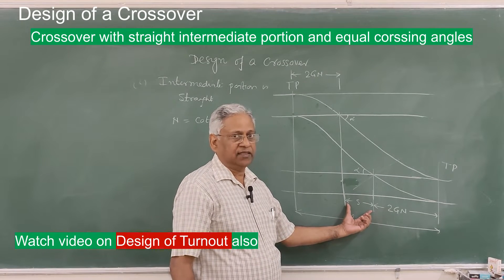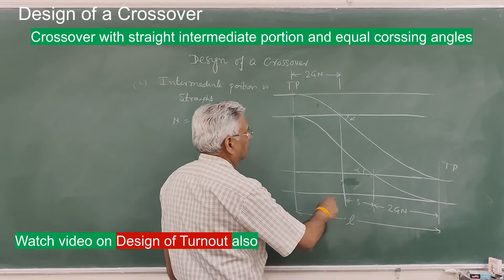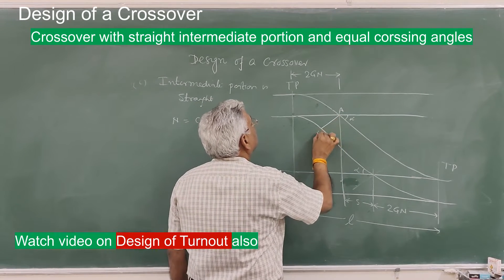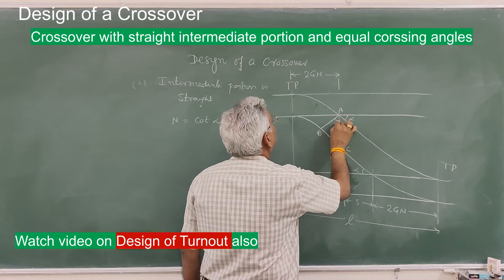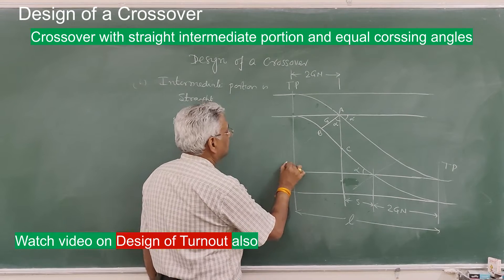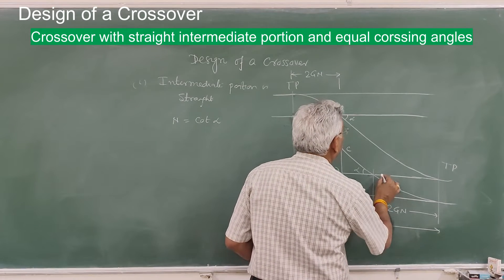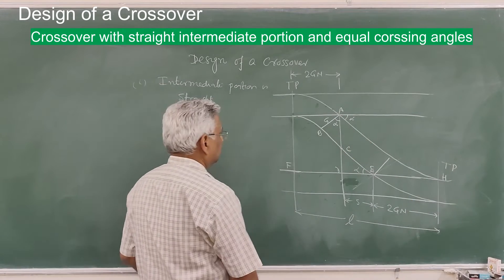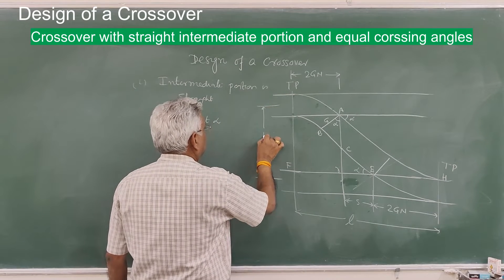The remaining portion is S. To find S, label the key points: A, B, C, E, F, and H. This angle is alpha, and A to B is the gauge. The distance between the parallel tracks center to center is D.